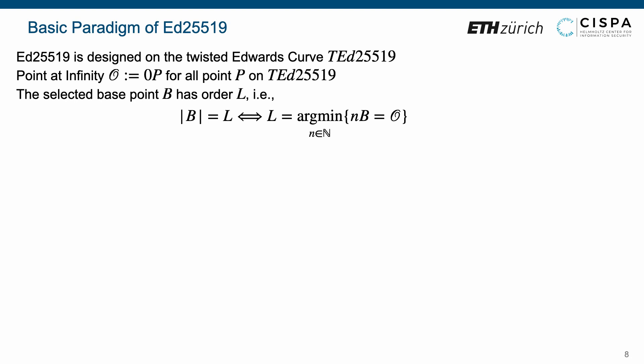Here, the order of point B, denoted by the absolute value |B|, defines the smallest positive integer n such that n times B equals the point at infinity.